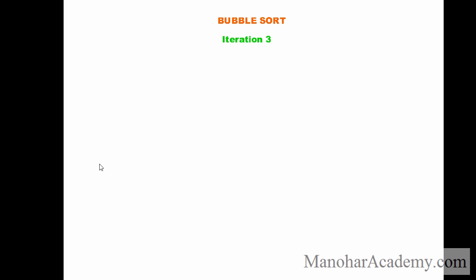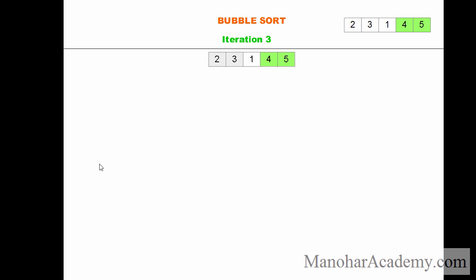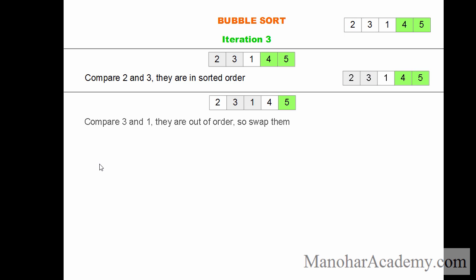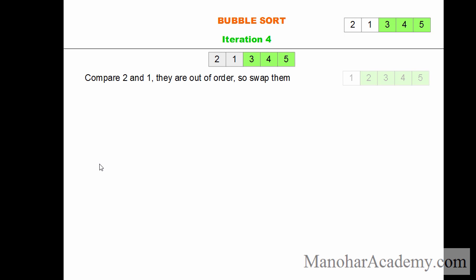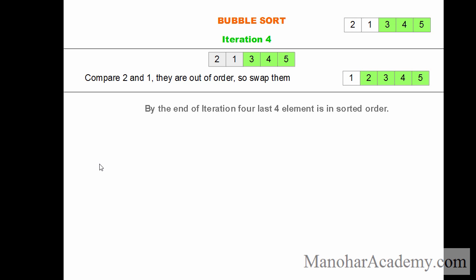Let us move on to iteration three. We start with 2, 3, 1, 4, 5. The last two elements are already sorted. We compare 2 and 3 — no need to swap. Then we compare 3 and 1 — they are out of order, so we swap them. Iteration three has only two comparisons. By the end of iteration three, we have the last three elements in the sorted order. Let us move on to iteration four. At the beginning of iteration four, the last three elements are already in sorted order. We compare 2 and 1 — there is a need for swap, so we swap it. This is the end of iteration four and the last four elements are already in sorted order.